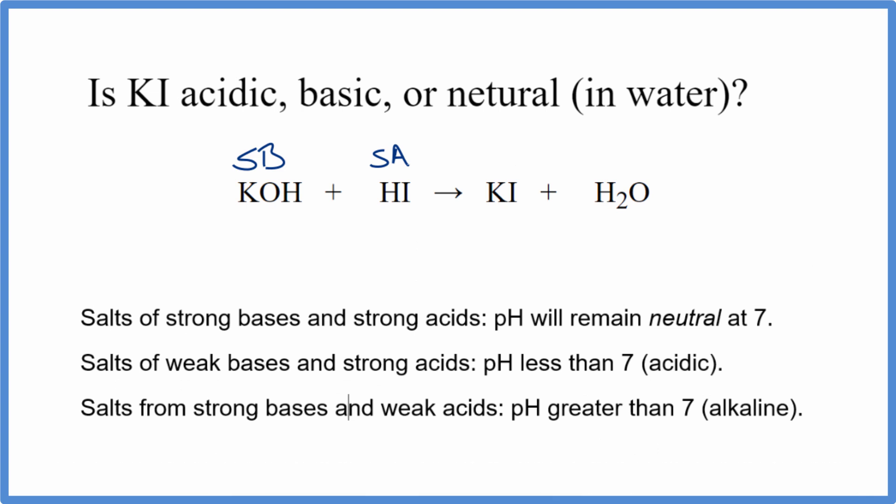Now we can use our rules. So if we have a strong base and a strong acid, the pH will be neutral at 7.